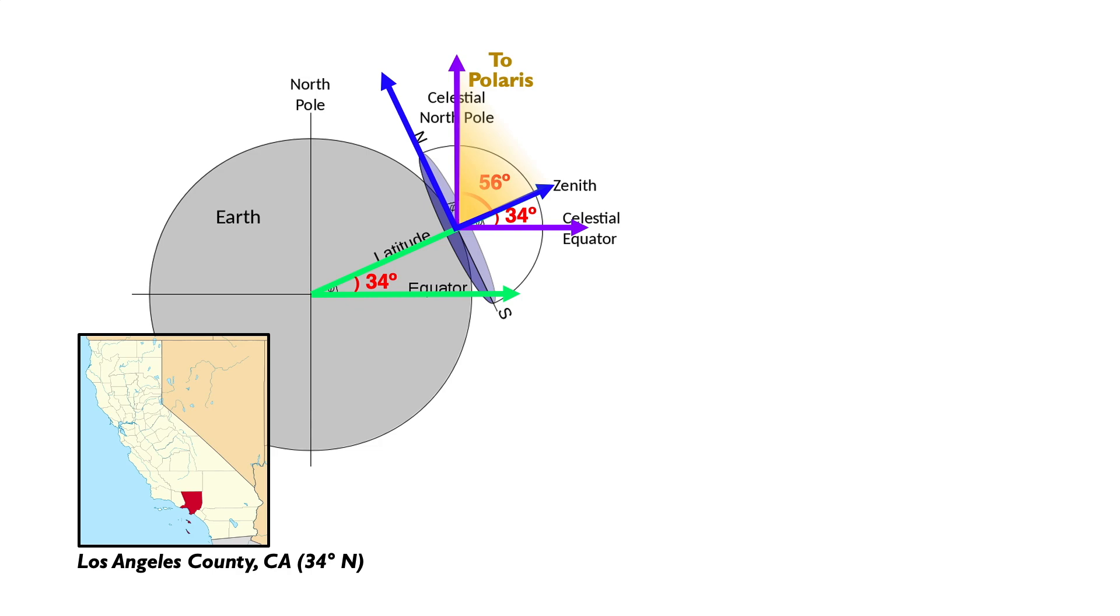then the remaining portion, the angle between your horizon and Polaris, would be 90 minus 56 or 34 degrees. And we're right back where we started at 34 degrees.